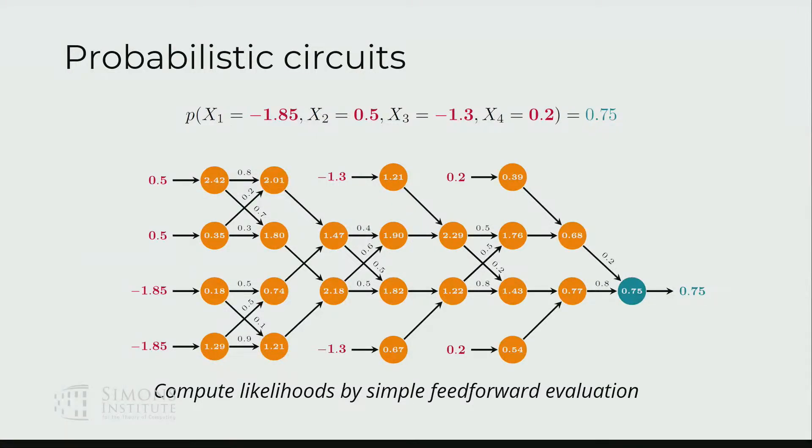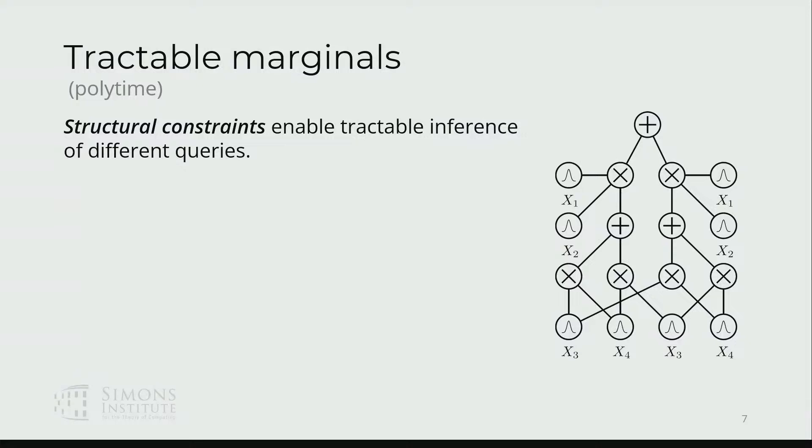That's all simple so far—this is just sums and products that are nested. Why is this special? Earlier I said we want a model that can answer different probabilistic questions efficiently. What's nice about them is we can start enforcing some structural constraints on the circuits, and that allows us to actually answer different query classes in polynomial time in the size of the model, and often this will be actually linear time, so it's quite fast in practice.